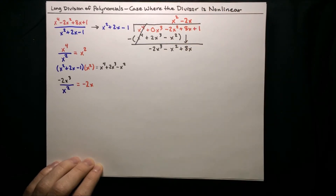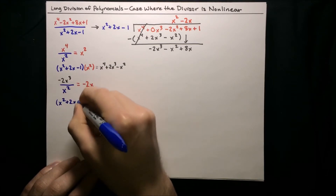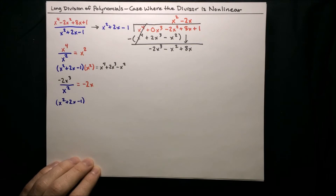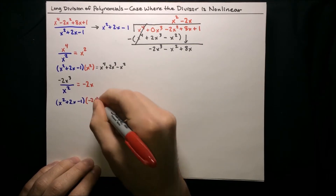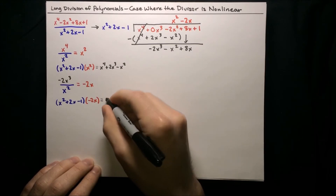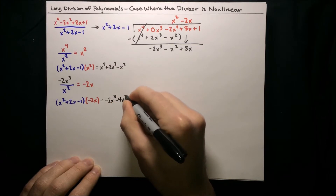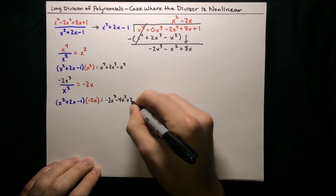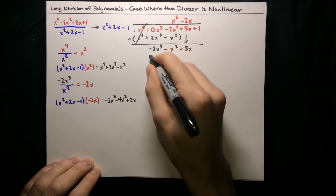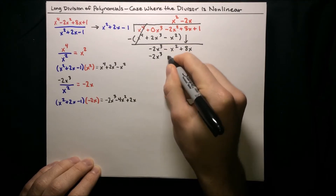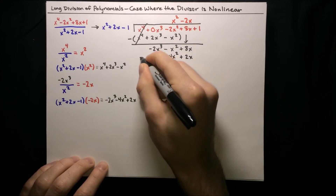Put that result up on top as part of our quotient, and then we have to multiply the divisor by that result. So we multiply x squared plus 2x minus 1 by negative 2x, and we get negative 2x to the third minus 4x squared plus 2x. We write that underneath in the corresponding columns: negative 2x to the third, minus 4x squared, plus 2x, and we subtract.